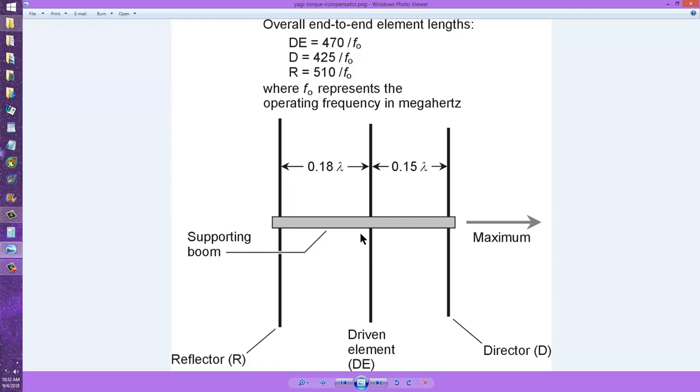And if you put that dummy element in just the right place, it will help to minimize the torque on that supporting mast and therefore the torque on the rotator when the wind blows and perhaps prevent the rotator from breaking or at least minimize the stress on the rotator.